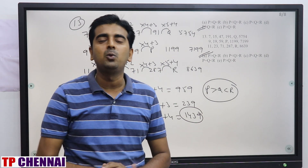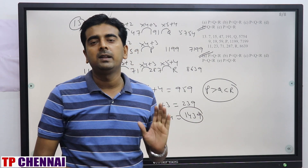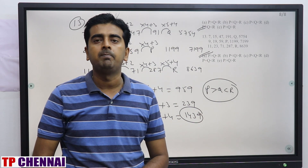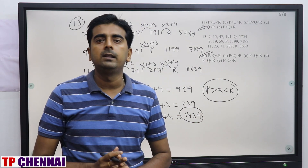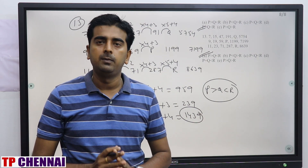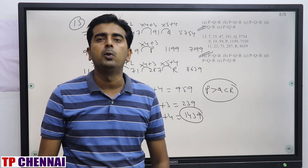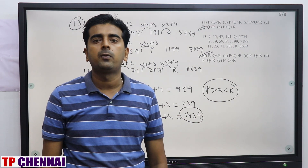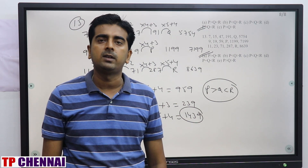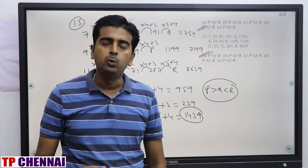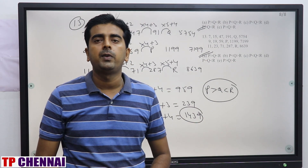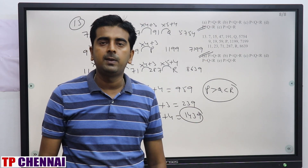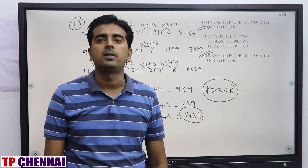So we have seen two sets of DI plus new pattern missing number series which they asked in the IBPS RRB PO Mains 2019 examination. Please post in the comment section how you liked this video, and do share it among your friends on Telegram, Instagram, Facebook, and WhatsApp. Do subscribe to TP Chennai YouTube channel for further updates and videos. All the best, thanks a lot.